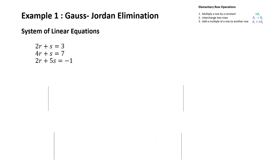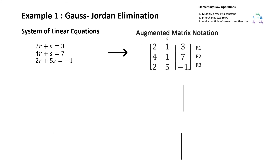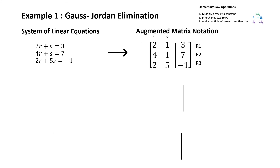Next, we will be looking at an example and solve this system of linear equations by using the Gauss-Jordan elimination method. The first step is to write this system of linear equations in the augmented matrix notation. We have looked at this process in great depth in a previous video.